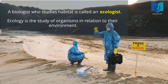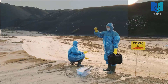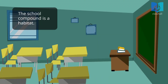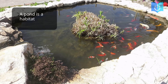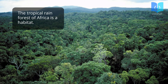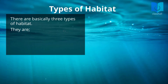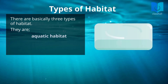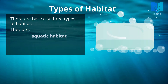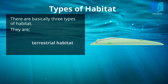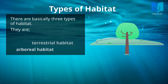There are many kinds of habitats. The school compound is a habitat, a pond is a habitat, and the tropical rainforest of Africa is a habitat. There are basically three types of habitat: aquatic habitat, terrestrial habitat, and arboreal habitat.